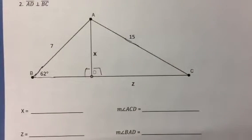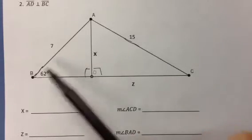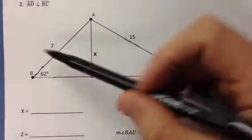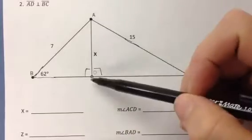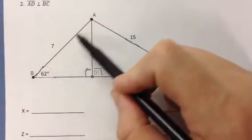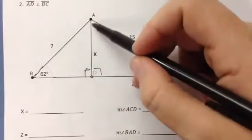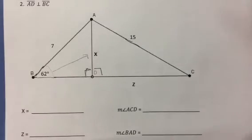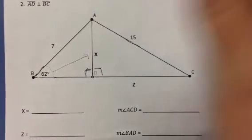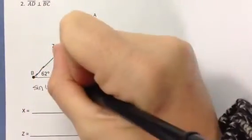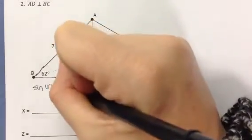Let's find x first. If I want to find x, I really only need to look at this triangle, triangle ABD. I'm given that this is a right triangle, and that this is 62 degrees. I know that this is the length of my hypotenuse, 7, and that x is going to be the side that is opposite that 62 degree angle. So I want to use the sine function for that. The sine of 62 degrees is equal to the opposite side, which is x, over the hypotenuse, which is 7.